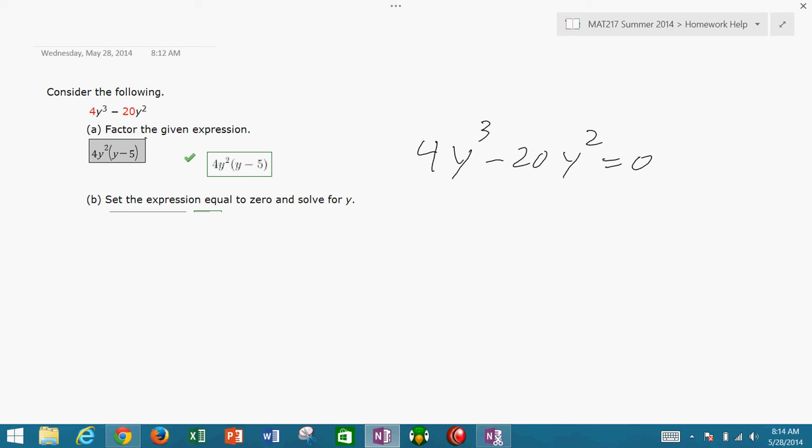So to solve this, the first thing you do, as you already did, you would factor, which would leave you with 4y squared times y minus 5 equals zero. So now you're gonna take each of the factors and set each of them equal to zero.